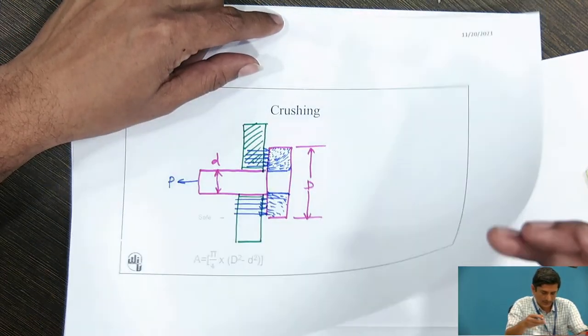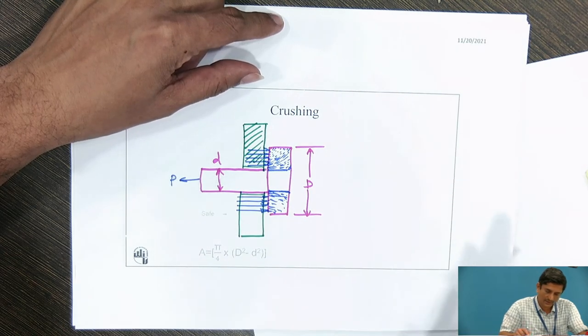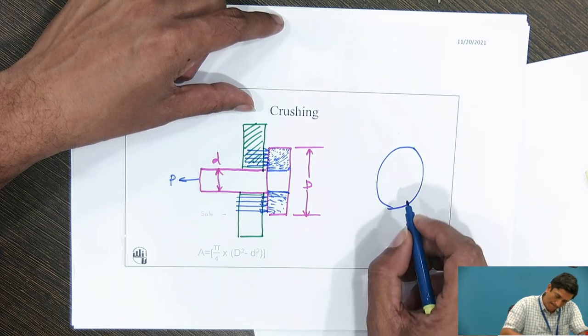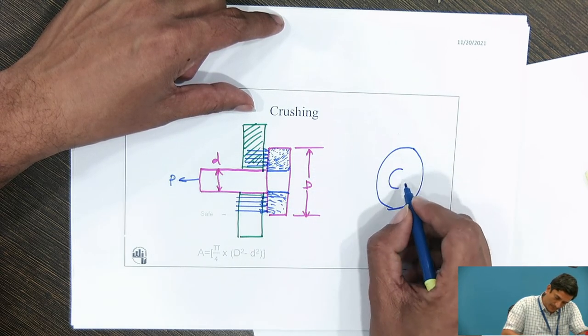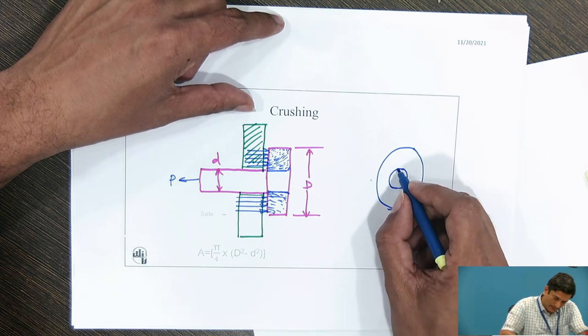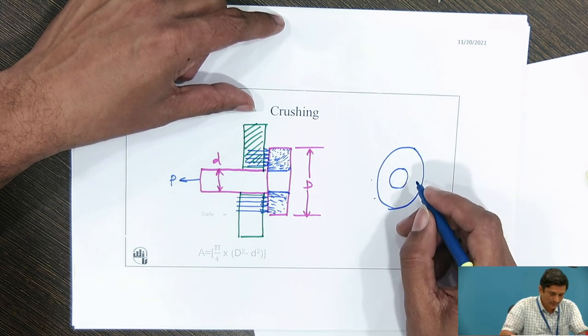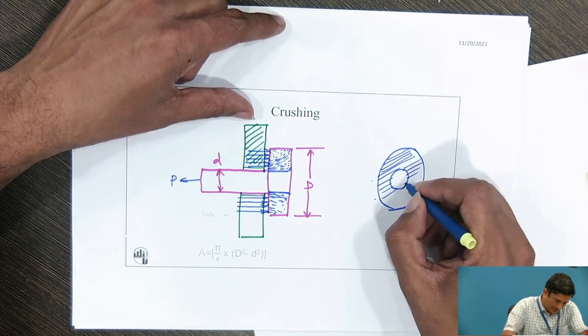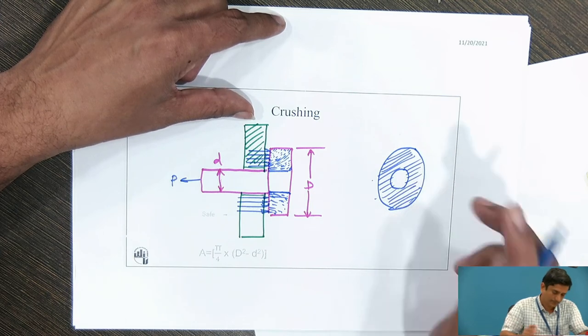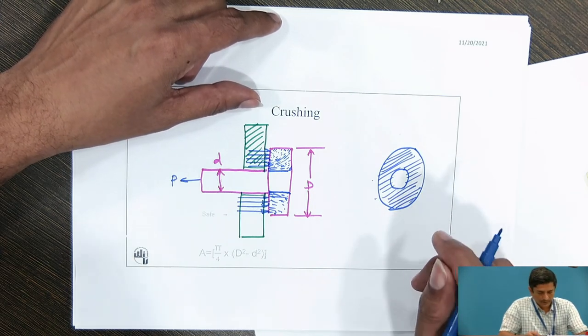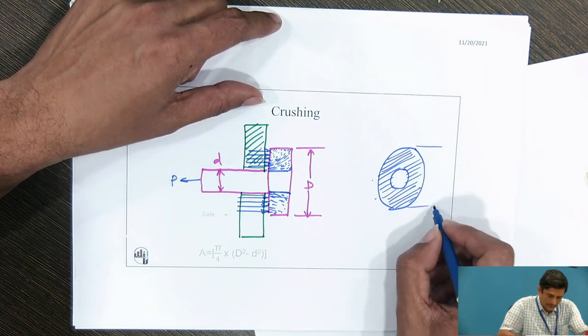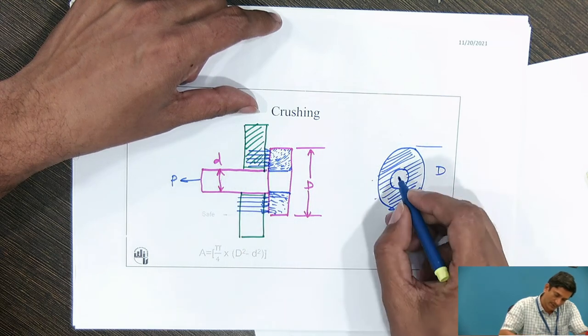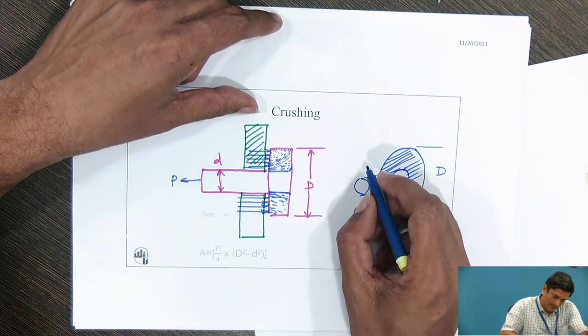Therefore, now what I need to do? I need to find out what area is under compression. For that, I need to check the area which is under compression. It is this outer area of the pin and this is the head. This is the annular area which is under compression or crushing will happen at this location.